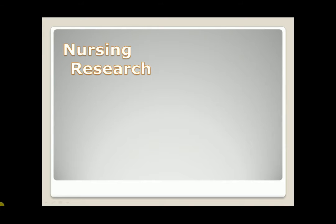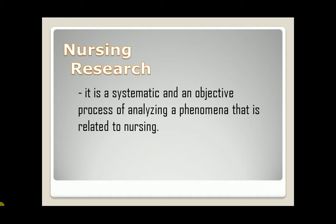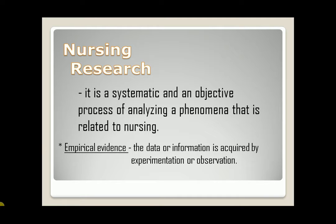What is nursing research? It is a systematic and an objective process of analyzing a phenomena that is related to nursing. Systematic means it is done in an organized process or it follows a step. Objective process means it is observable, researchable, and with empirical evidence. Empirical evidence means the data or information is acquired by experimentation or observation.